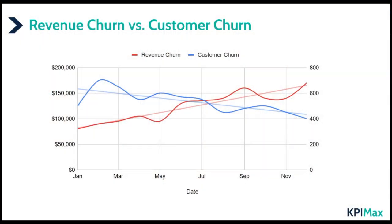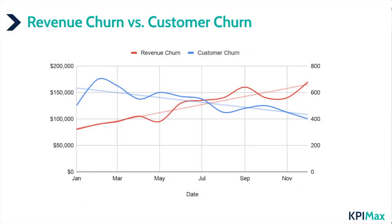Churn is an important metric and we will come back to its impact on other metrics. For now, let's look at the difference between customer churn and revenue churn. So far we've only looked at customer churn, but we're usually more interested in revenue churn. What if your customer churn goes down but your revenue churn goes up? Yes, both churn rates can move in opposite directions — in blue we see customer churn going down, but revenue churn in red is going up, which is definitely not what we want.